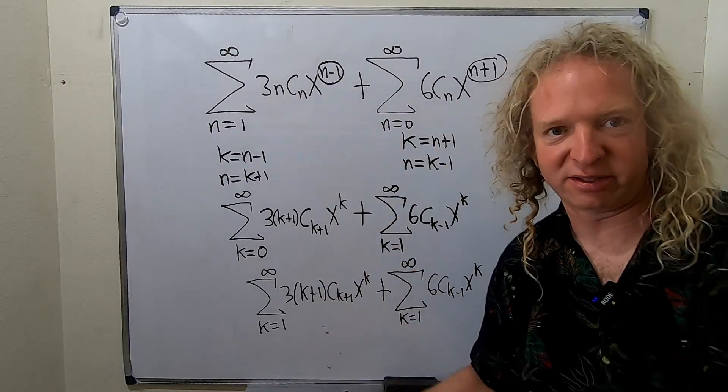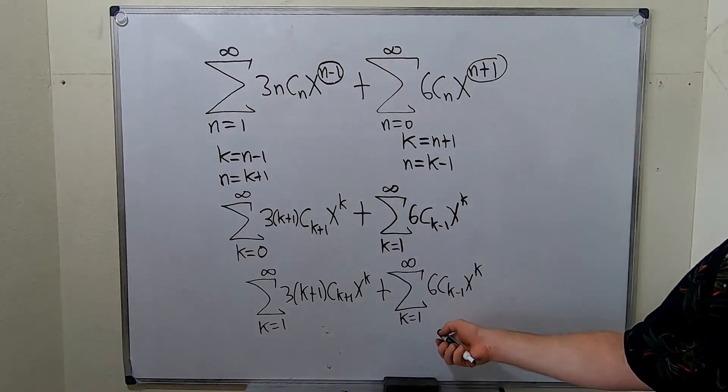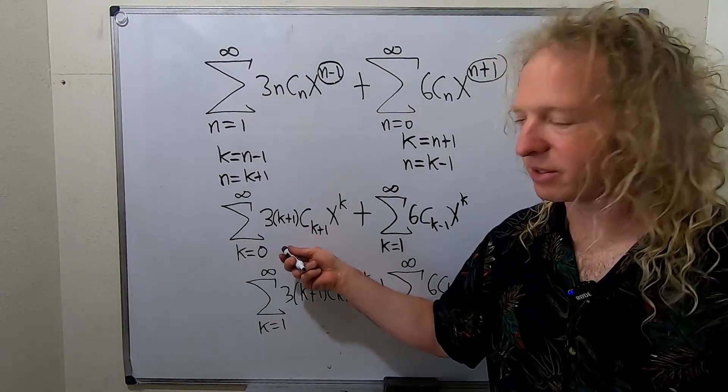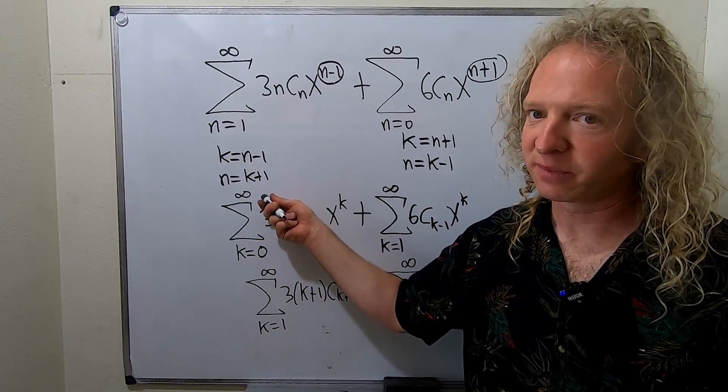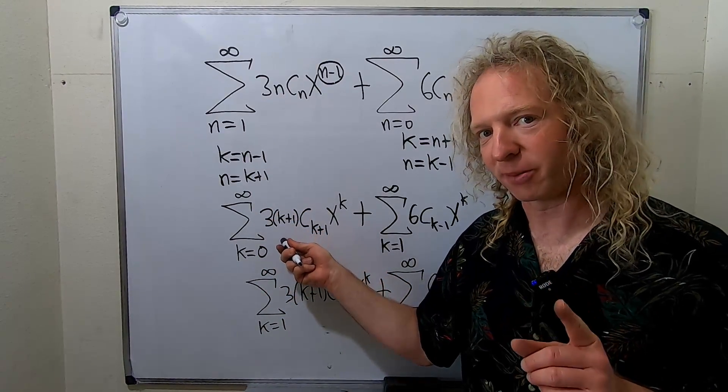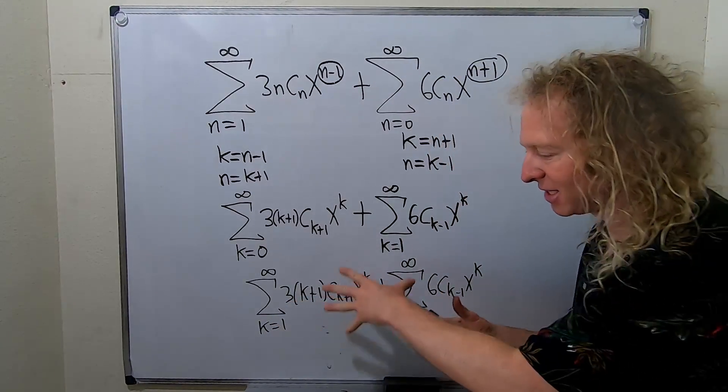This is not equal to this at this point. This is incorrect. These are obviously not the same. This is this, but this is not this. So let's think about this. What is this? This is the sum from 0 to infinity. This is the sum from 1 to infinity. This has an extra term. It has the 0th term. So we're missing that 0th term here.